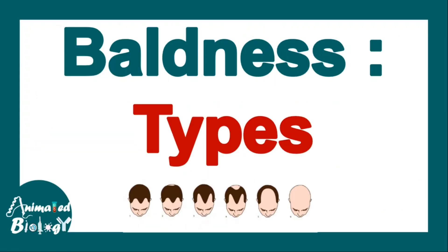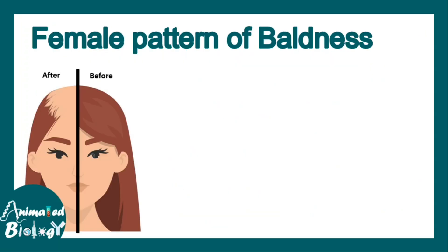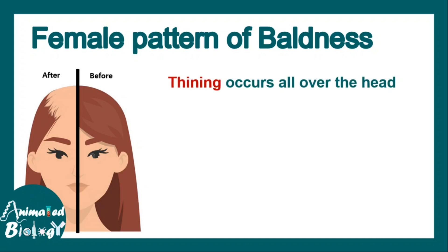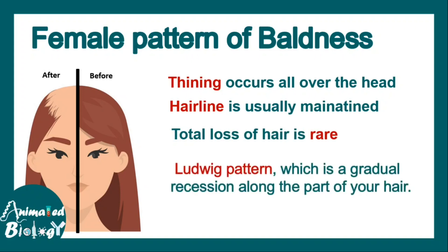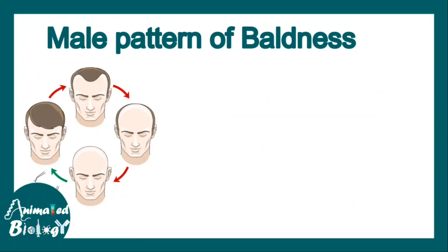There are different types of baldness. Female pattern baldness is one kind where females start to lose hair; the thinning occurs all over the head with no particular patchy pattern. The hairline is usually maintained — that means the anterior limitation of the hairline — and total loss of hair is usually rare. There is also a pattern known as the Ludwig pattern, where there is a gradual recession of the parting line of the hair.